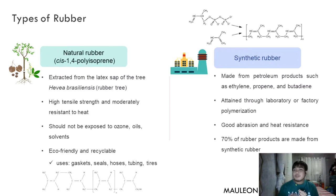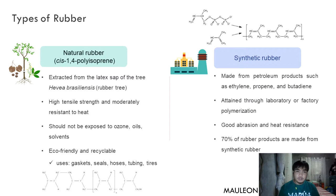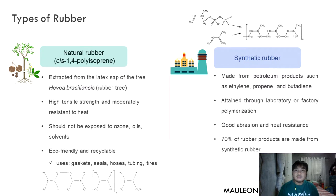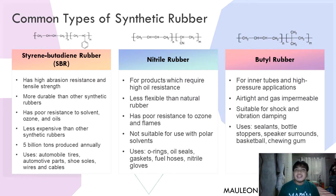Natural rubber is eco-friendly and recyclable, and is commonly used on gaskets, seals, hoses, tubing, and tires. Synthetic rubber, on the other hand, is made from petroleum products such as ethylene, propylene, and butadiene, and is only attained through laboratory or factory repolymerization. It has good abrasion and heat resistance, and 70% of rubber products are made from synthetic rubber.